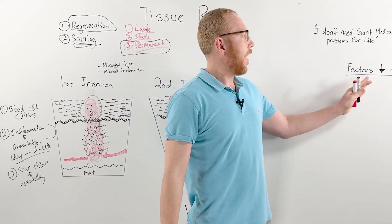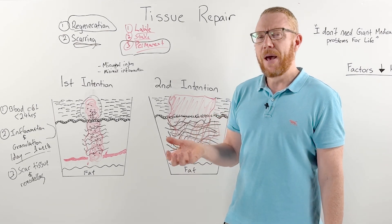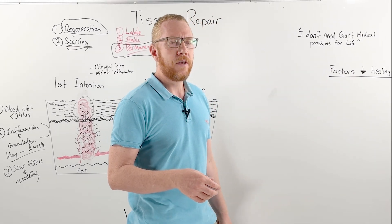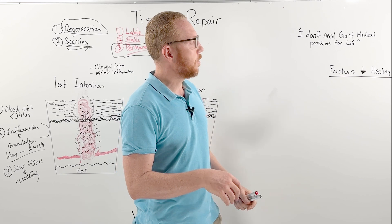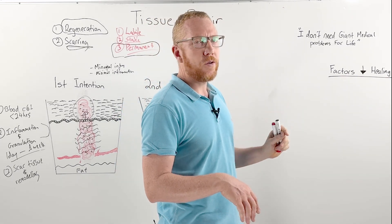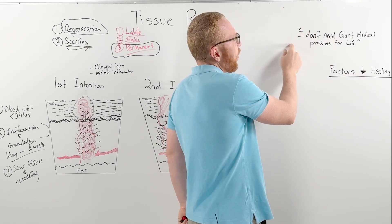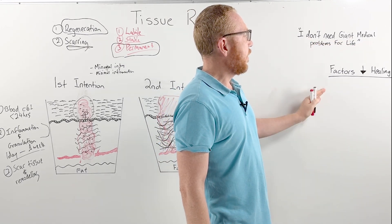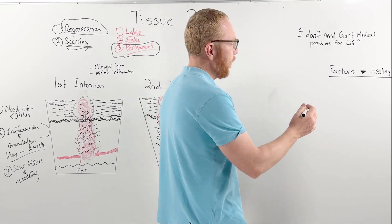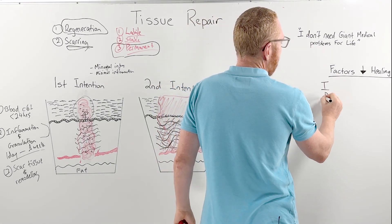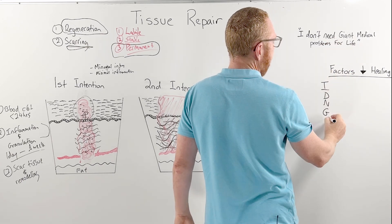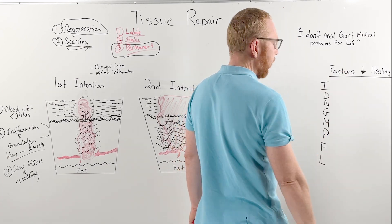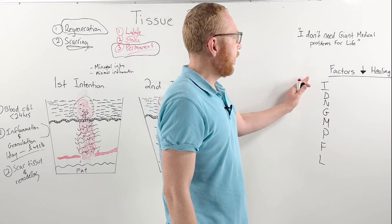Finally, we'll look at factors that decrease the wound healing process — things present in a patient that will slow healing. A mnemonic to remember the most important factors is: 'I don't need giant medical problems for life,' where each starting letter represents a factor: I, D, N, G, M, P, F, L.